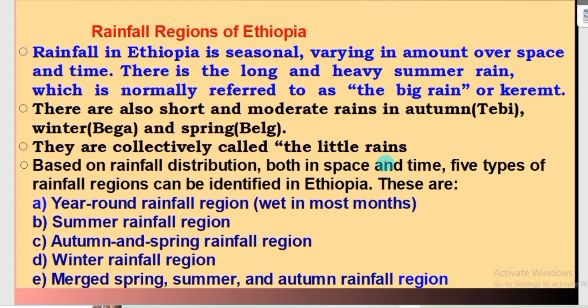Based on rainfall distribution both in space and time, there are five types of rainfall regions in Ethiopia. These regions are: year-round rainfall region, summer rainfall region, autumn and spring rainfall region, winter rainfall region, and merged spring, summer, and autumn rainfall region.